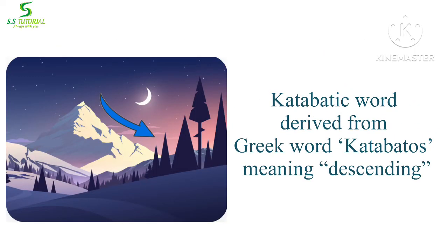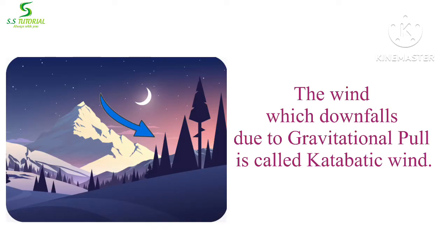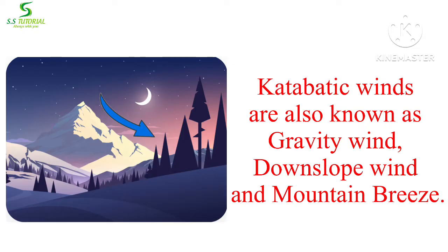Let's discuss katabatic winds. The word katabatic is derived from the Greek word 'katabatos,' meaning descending. The wind which falls downward due to gravitational pull is called katabatic wind. Katabatic winds are also known as mountain breeze, downslope winds, and gravity winds.